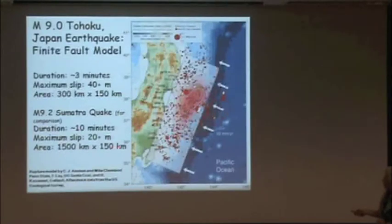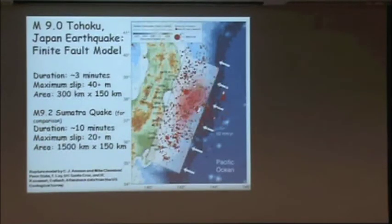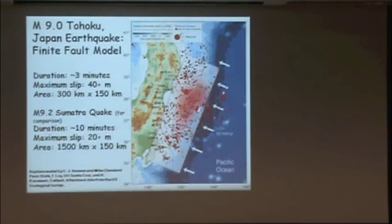The maximum slip in the Sumatra earthquake was about 20 to 25 meters, but the area was humongous — 1,500 kilometers long, nearly 1,000 miles, and about 150 kilometers wide.